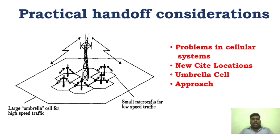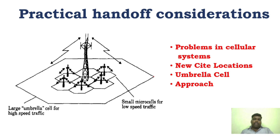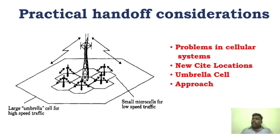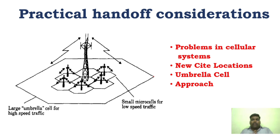Now, practical considerations for handoff. There are a lot of problems in the cellular system. In a particular location, there can be high-speed users such as vehicles on a highway traveling at 100 km/h, and there can be low-speed users such as pedestrians. For high-speed users, handoff happens very fast. There should be some technique to handle both high-speed and low-speed users, which can be done using certain criteria and practical considerations.